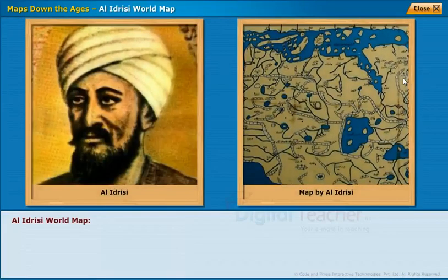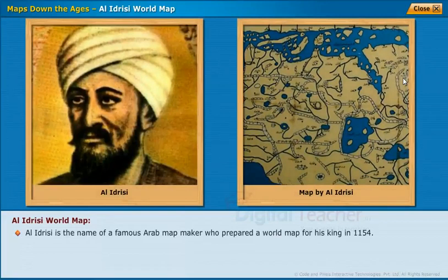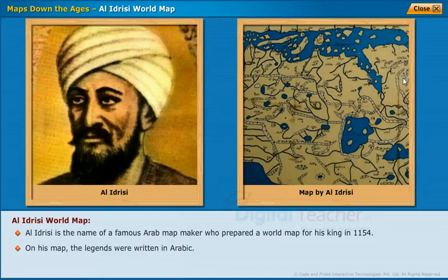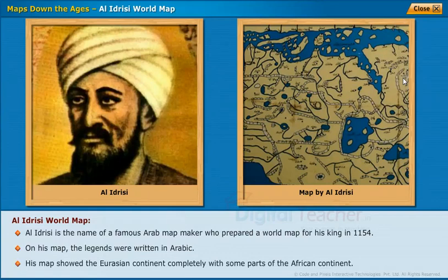Al-Idrissi World Map. Al-Idrissi is the name of a famous Arab map maker who prepared a world map for his king in 1154. On his map, the legends were written in Arabic. His map showed the Eurasian continent completely, with some parts of the African continent.